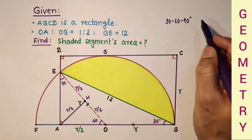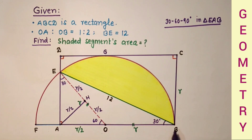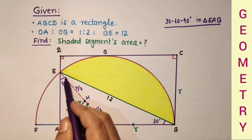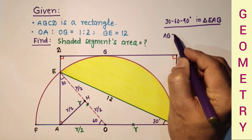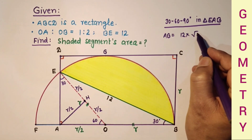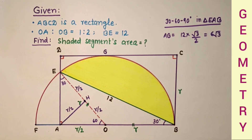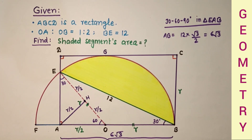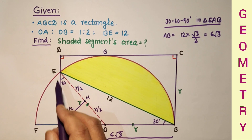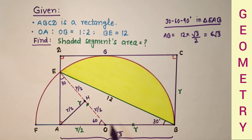In triangle EAB, BE is 12. This angle is 60 degrees because this other angle is 30 degrees. The side opposite to 60 degrees is AB, which equals hypotenuse times root 3 by 2, giving 6 root 3. So AB equals 6 root 3. The side opposite to 30 degrees will be half the hypotenuse, so OA equals 6.